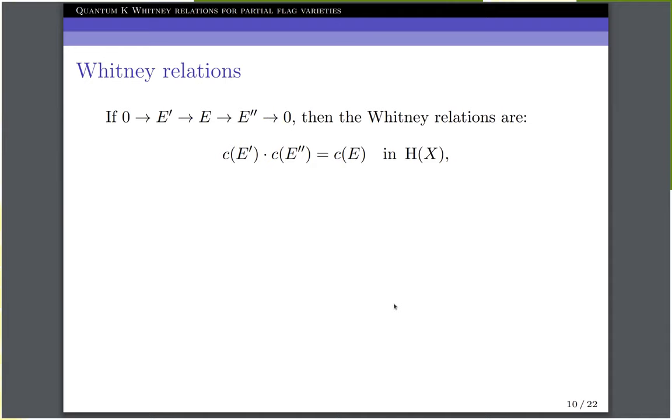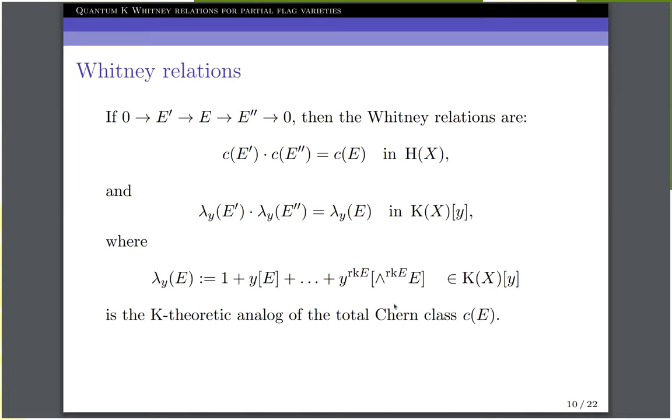So whenever you have a short exact sequence of vector bundles on X going from E prime to E to E double prime, then the Whitney relations say that the total Chern class of E is equal to the product of the total Chern classes of E prime and E double prime. This happens in cohomology. Now to get the K-theoretic analog, you just need to replace the total Chern class by its K-theoretic analog, which is the lambda y class defined in this way. In particular, the i-th Chern class of a vector bundle is replaced by the K-theory class of the i-th wedge of that vector bundle. And here, y is a formal variable. And these Whitney relations are equivariant.